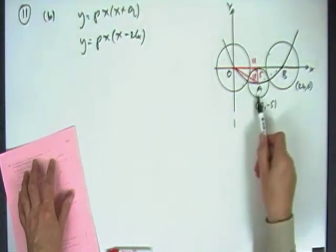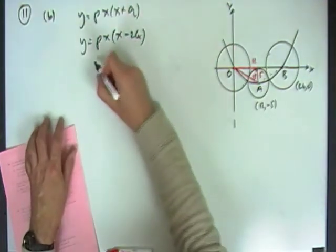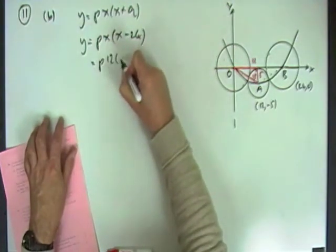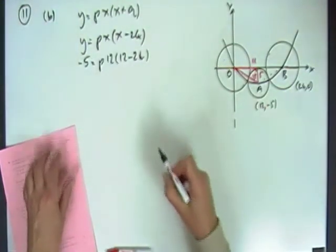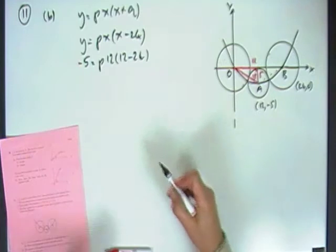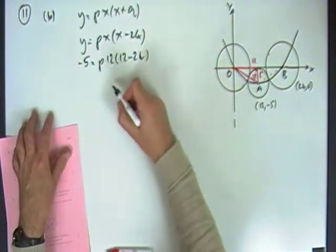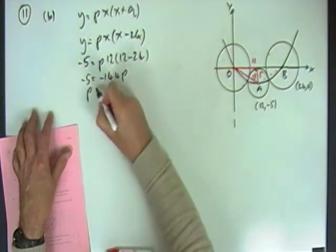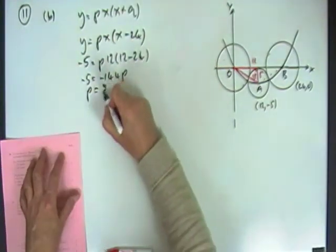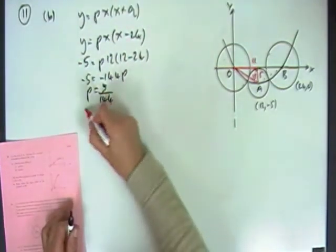This will do nicely. The point A, that says if X is, sorry, it's 12, if X is 12, then Y should be negative 5. So multiplying that lot out, that's actually negative 12, so that's negative 144. So you've got negative 5 is negative 144 P, having it backwards, or simply P equals, taking it across and divide, 5 over 144.